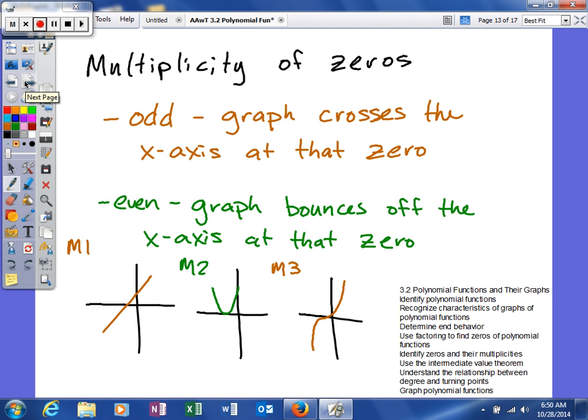The multiplicity of zeros, we basically have two types. We could have an odd multiplicity or an even multiplicity. And if there's an odd multiplicity, our graph crosses the x-axis at that zero.